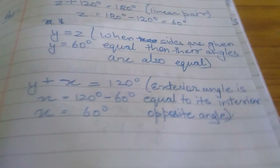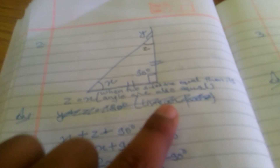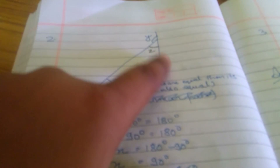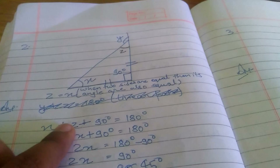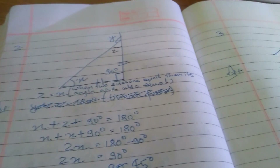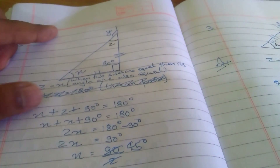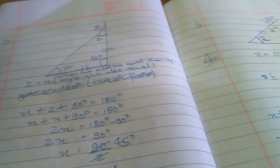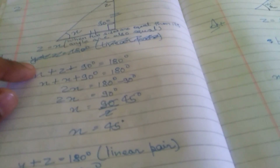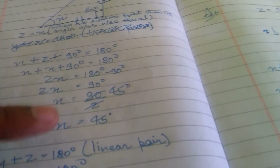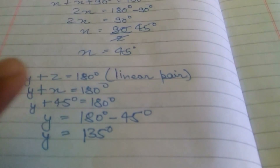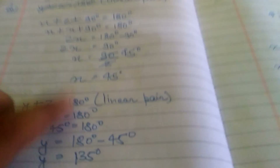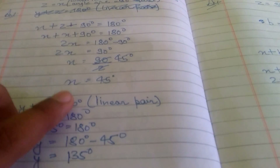X is equal to 60 degrees after solving. Second part: this is 90, and these two sides are equal. This is Z, this is Y, and this is X. Z equals X because when two sides are equal, their angles are also equal. X plus Z plus 90 equals 180 because the sum of triangle's angles is 180, so X equals 45 degrees. Then Y plus Z equals 180 by linear pair; since Z equals X, Y plus X equals 180, giving Y equals 135 degrees.